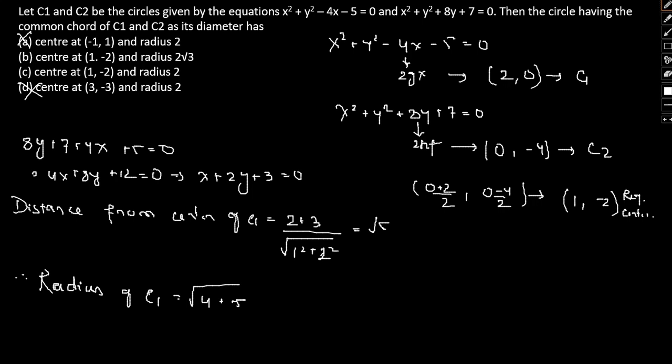The radius of the required circle can be given by simply √(3² - 5) = √(9 - 5) = √4 = 2. Therefore, option (b) is also cancelled and option (c) is our correct answer.